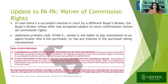Next is waiver of commission rights — another very important one that was never in the contract before. This discusses cases where there's a successful overbid in court by a different buyer's broker: the buyer's broker whose offer was accepted, subject to court confirmation, waives all commission rights. There have been some issues in the past about this, and this protects everybody. Additionally, letter B addresses probate code 10160.5, indicating that the estate is not liable to pay commission to an agent or broker who is the purchaser or has any interest in the purchaser being represented.